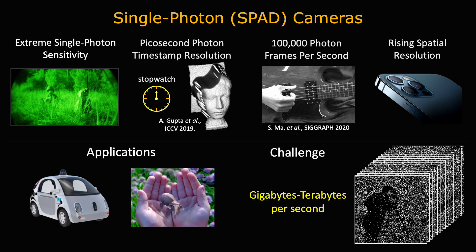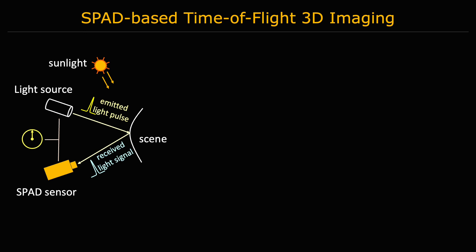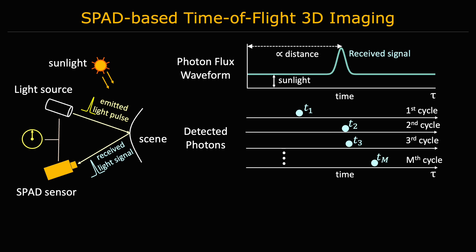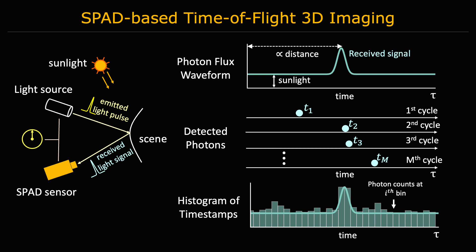In this work, we tackle this data bandwidth problem in the context of 3D imaging. SPADs are commonly used for time-of-flight 3D imaging where the SPAD is synchronized with a pulse laser. The pulse arriving at the sensor will have a time delay proportional to distance. SPADs sample the received signal one photon at a time and after multiple detection cycles, many photons with different times of arrival will have been detected. To estimate distances, we can build a histogram of timestamps and estimate the shift of this pulse.